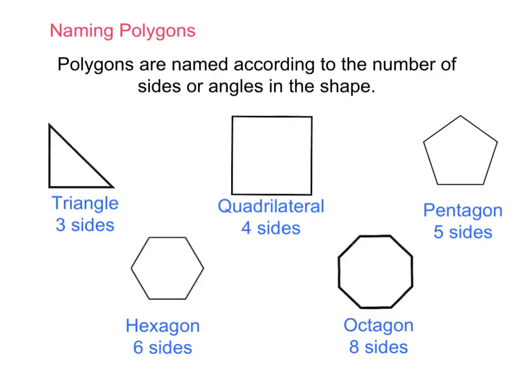Okay Year 7, you now need to write 'Naming Polygons' as a subheading. This isn't a main topic heading — this is a subheading. You can write it in the same colour and maybe just underline it. Underneath that subheading, you are to write the following definition: Polygons are named according to the number of sides or angles in the shape. That's how we identify different polygons, based on the number of sides or angles in the actual shape.